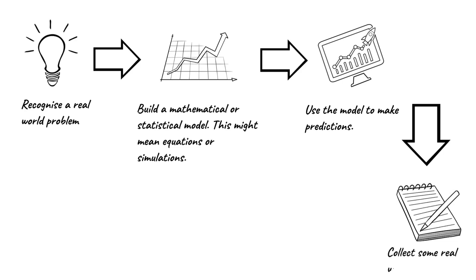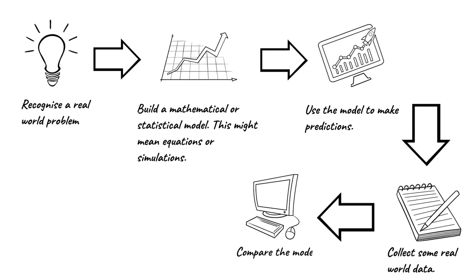Then you would collect some real-world data about how fast COVID spread and then you would compare the model to the data. This would allow you to determine if it was either a droplet infection or airborne, because the models give you different sets of results that you can compare to reality.